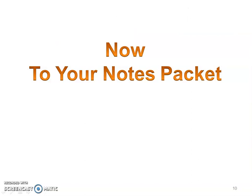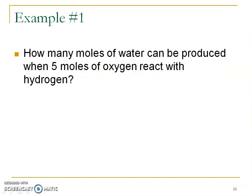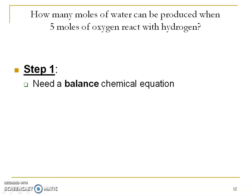All right so now off to our notes packet. So the easiest way to do this is to do a practice problem. If you don't have out your calculator already you might also want to pause and get your calculator out. So it says how many moles of water can be produced when five moles of oxygen react with hydrogen? So pause, fill in those blanks. Come up with a balanced equation from those words and then play to hear mine.